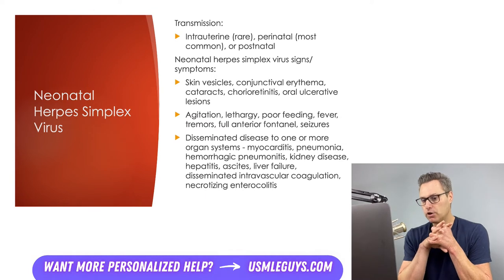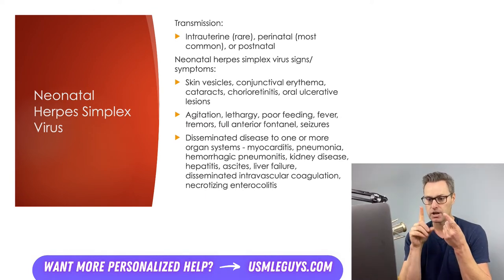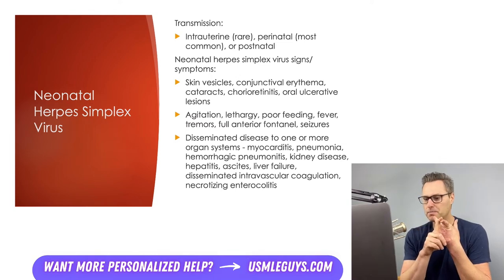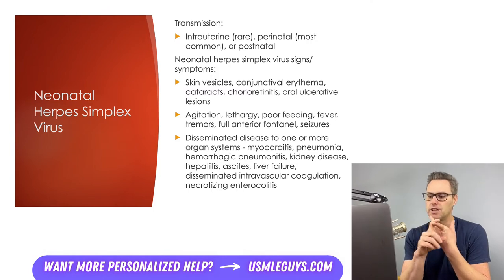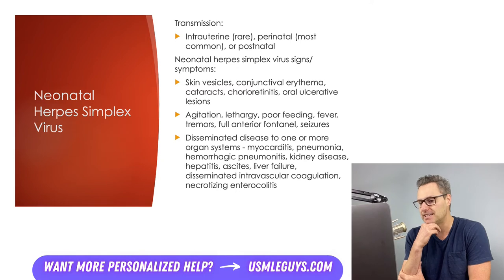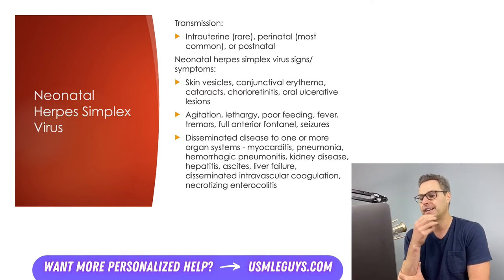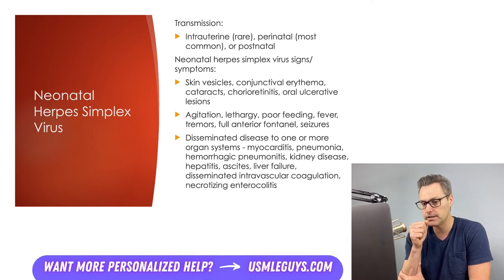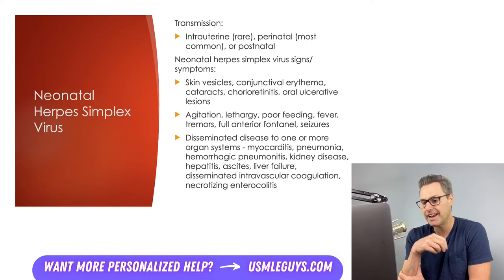Neonatal HSV signs and symptoms are broken into three manifestations. The first is skin, eye, and mouth disease. Neonates can develop typical skin lesions associated with HSV — clusters of vesicular lesions with an erythematous base. Eye disease begins as conjunctival erythema and excessive watering and can progress to cataracts and chorioretinitis if not promptly treated. Oral ulcers can be located on the tongue, palate, and mucosal lining of the mouth.